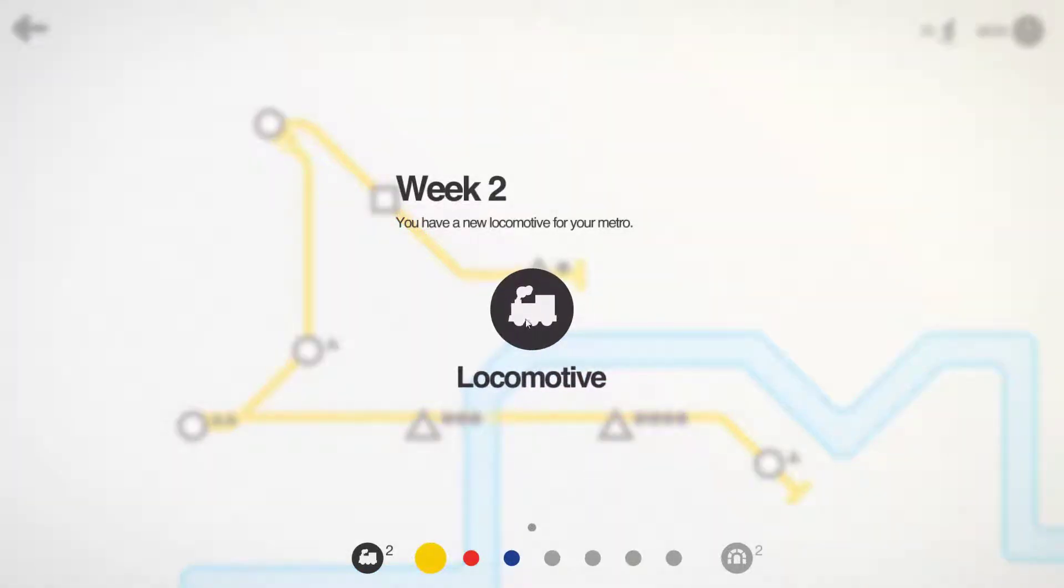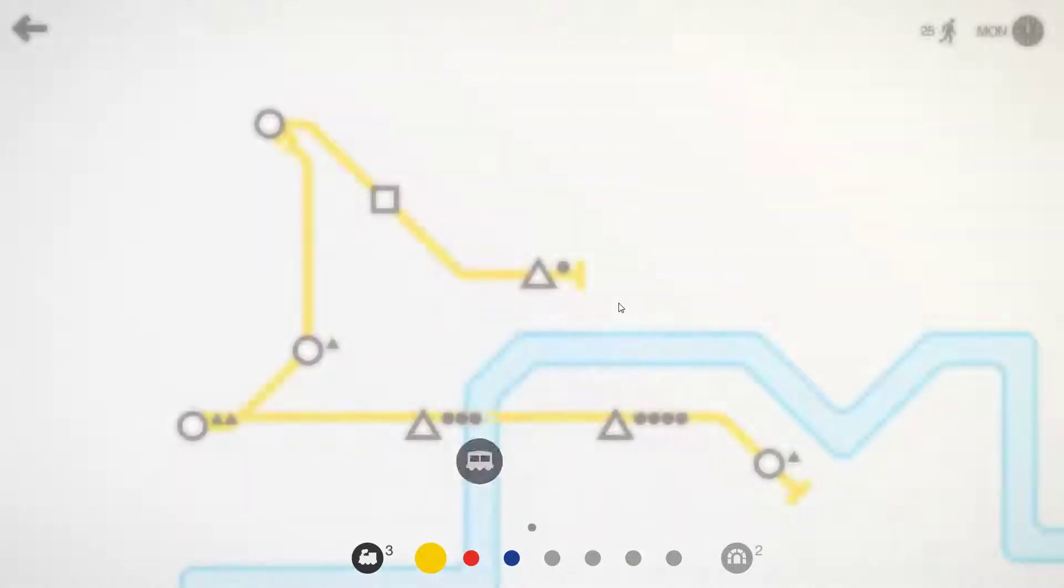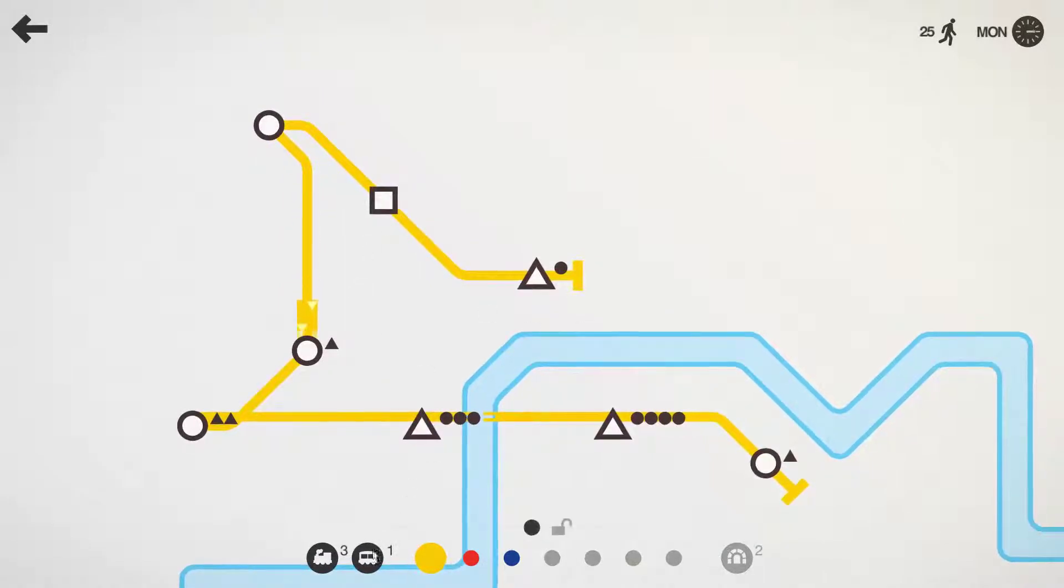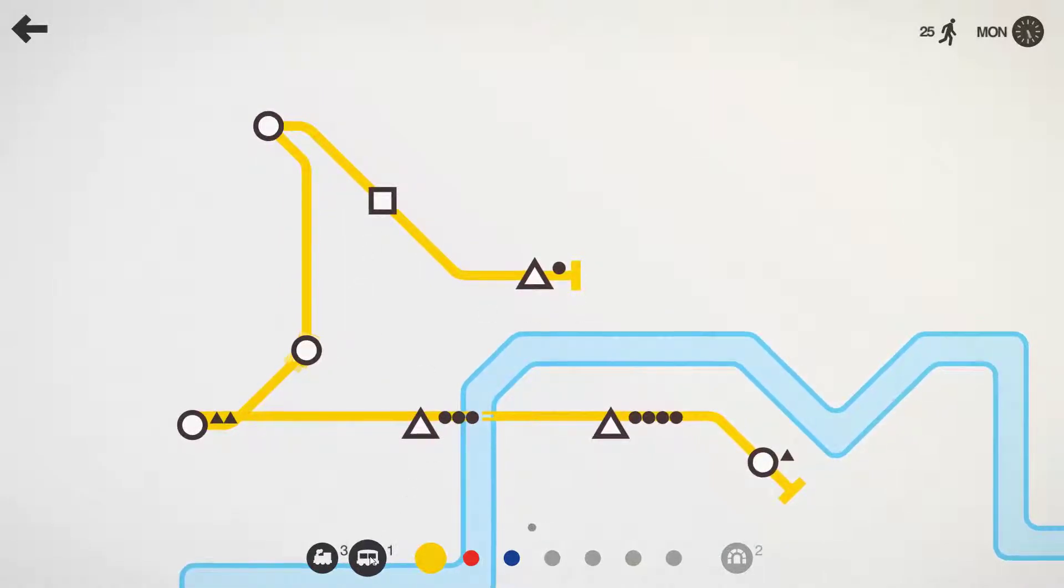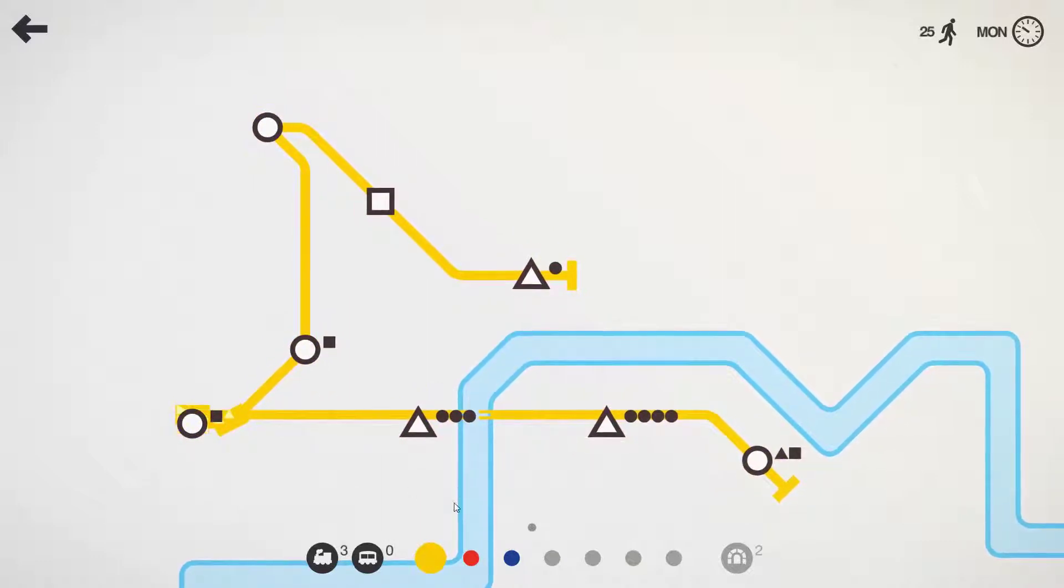Week two. I get a new locomotive. And I can choose whether I want a carriage for that or a new line. I haven't even used my second or third line yet, so I'm going to ask for the carriage. That improves capacity. We're going to need a carriage on the yellow line at some point anyhow, so I'll go ahead and drop it. And it makes this train longer, and it can carry more passengers.